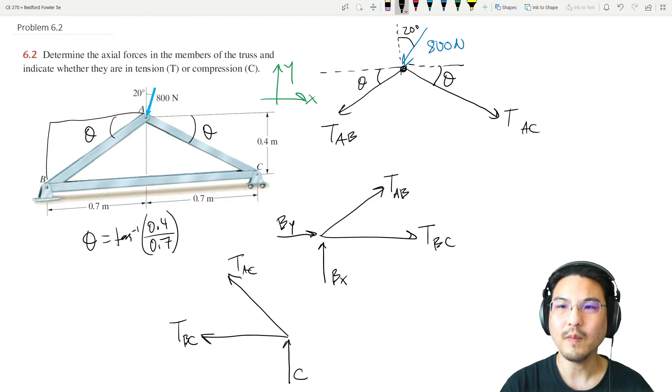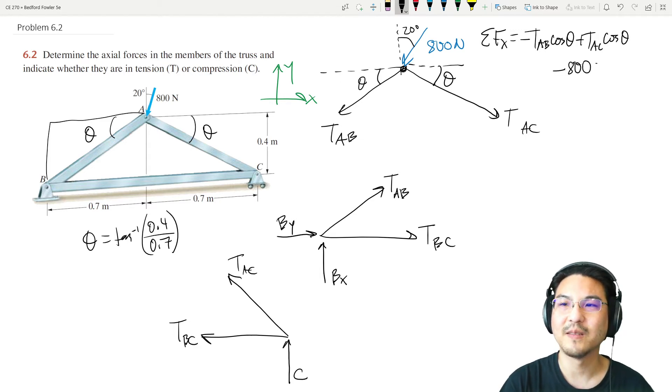For each free body diagram we can write two equations. For joint A, let's write two equations. In the x direction, we got negative TAB cosine theta plus TAC cosine theta minus 800 sine 20, because the x direction is here which is opposite that 20 degrees.